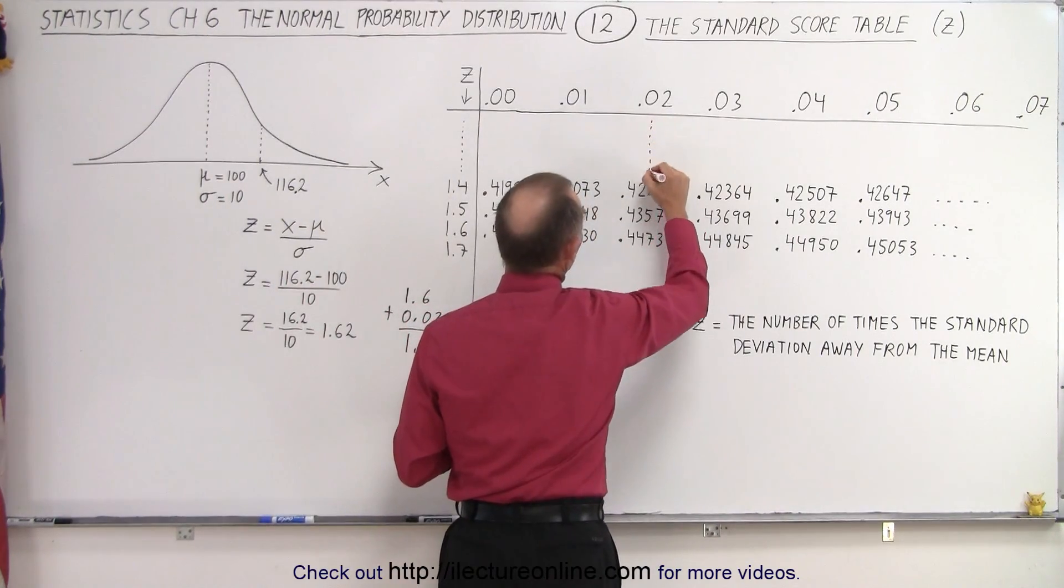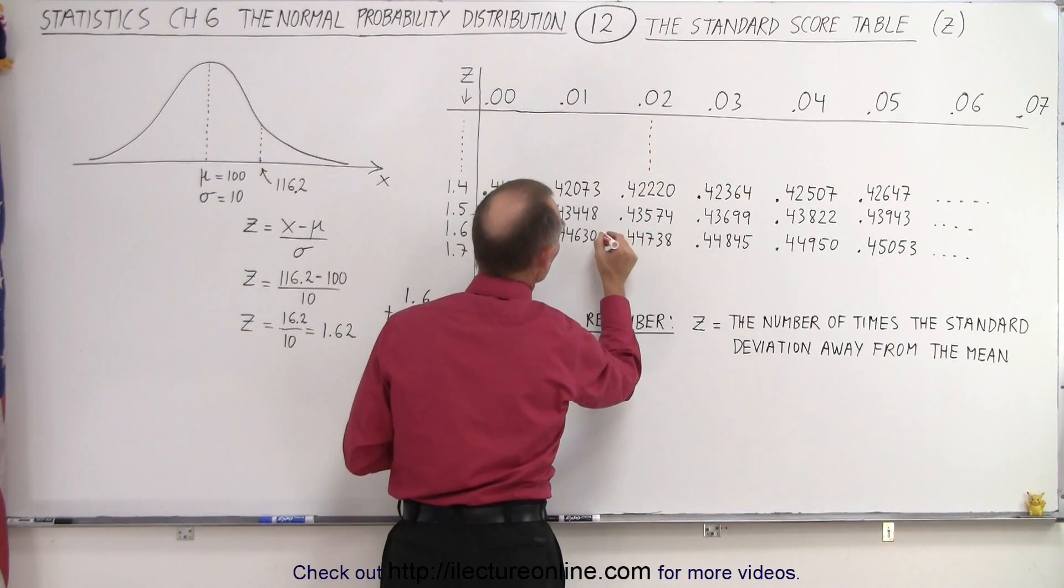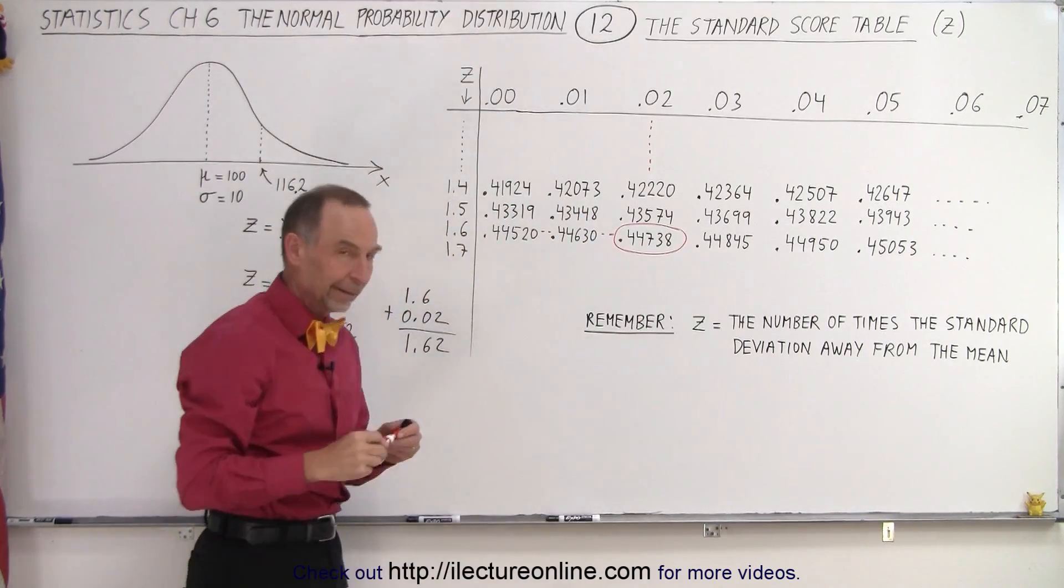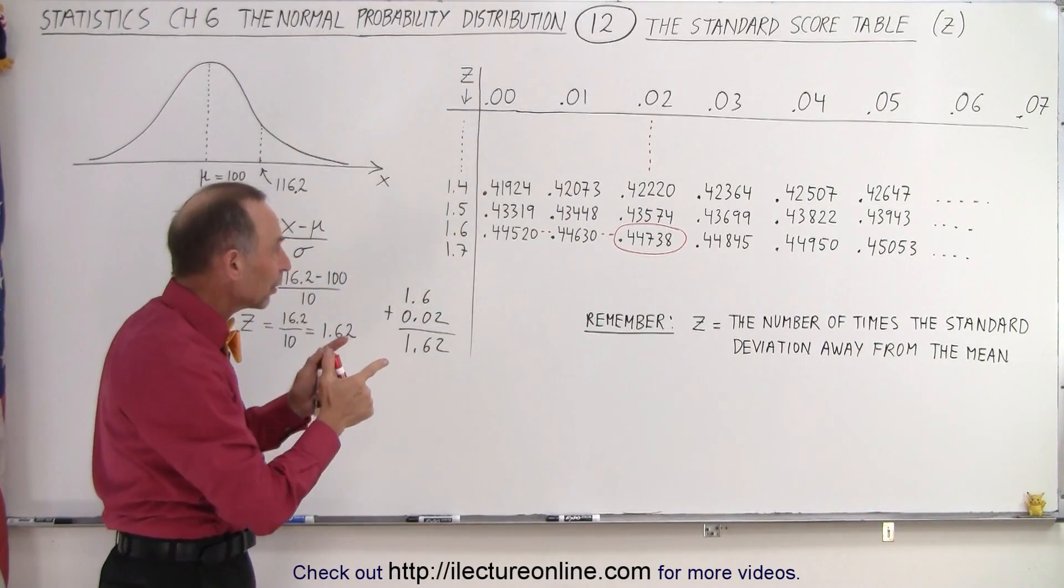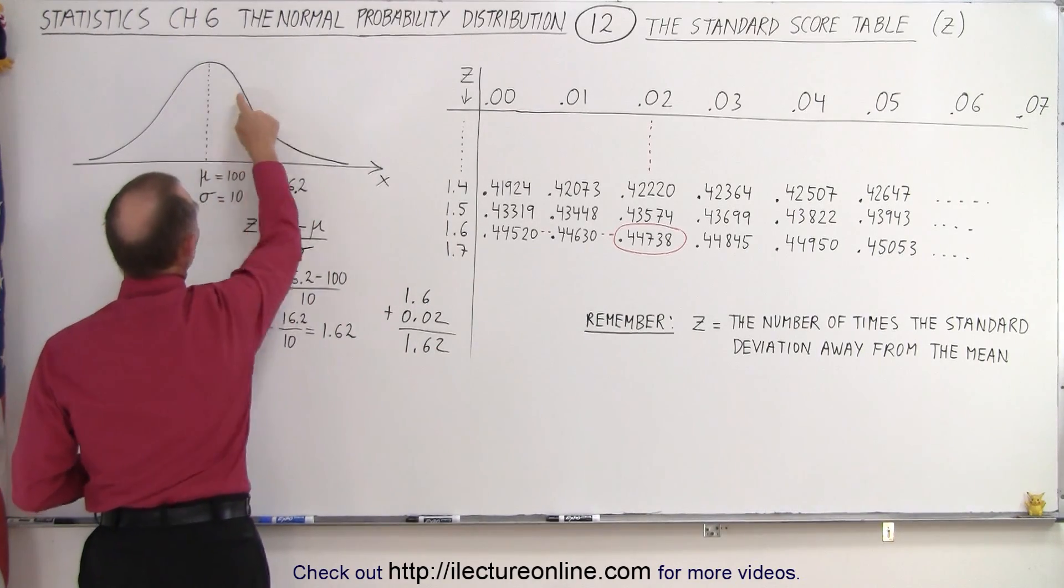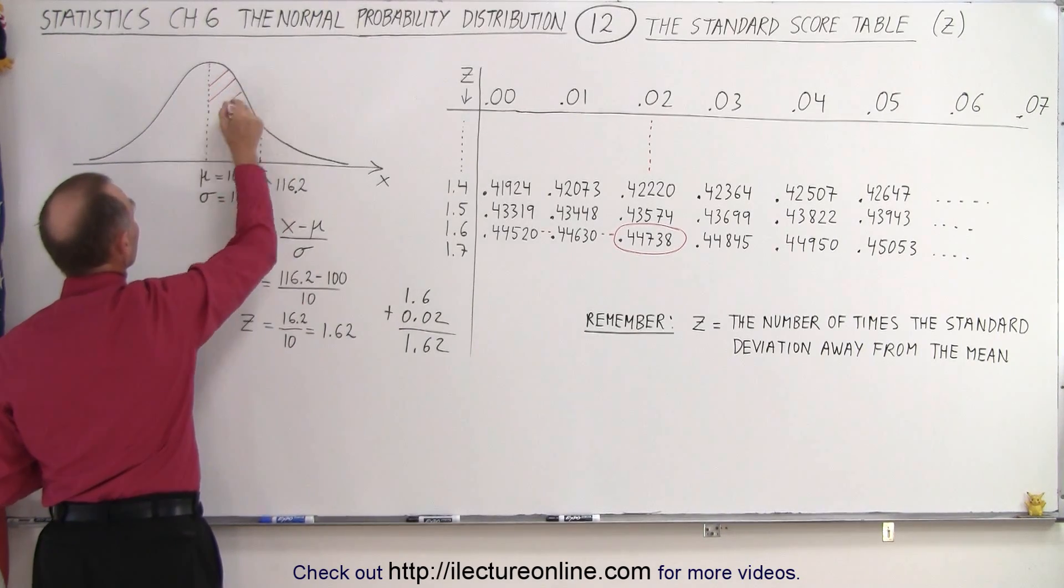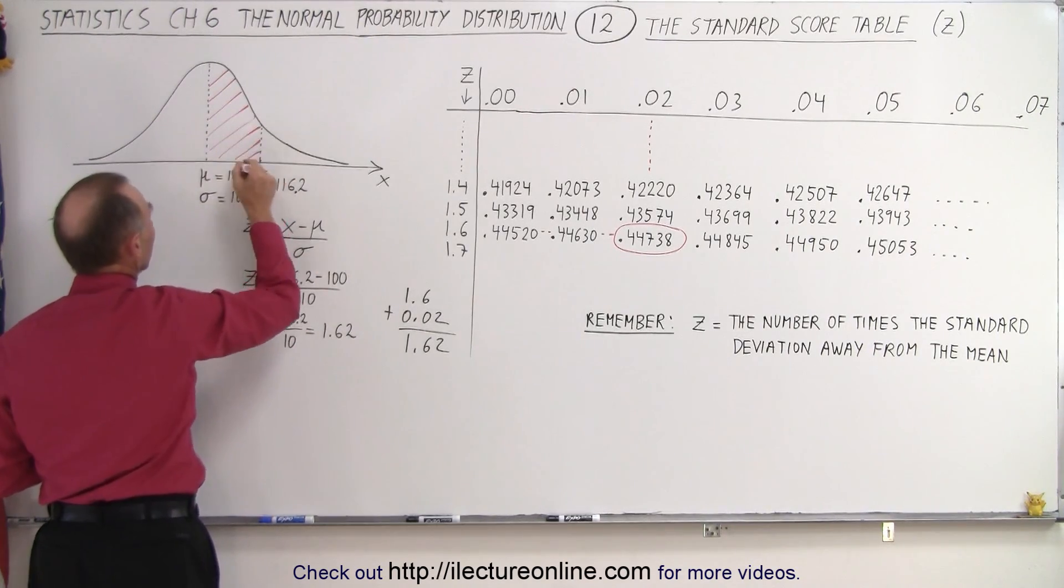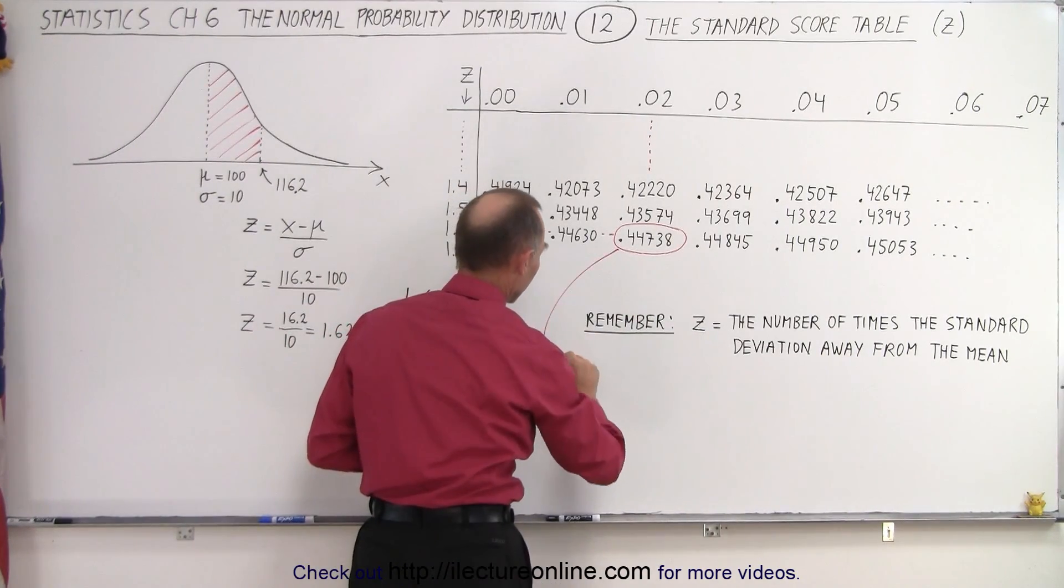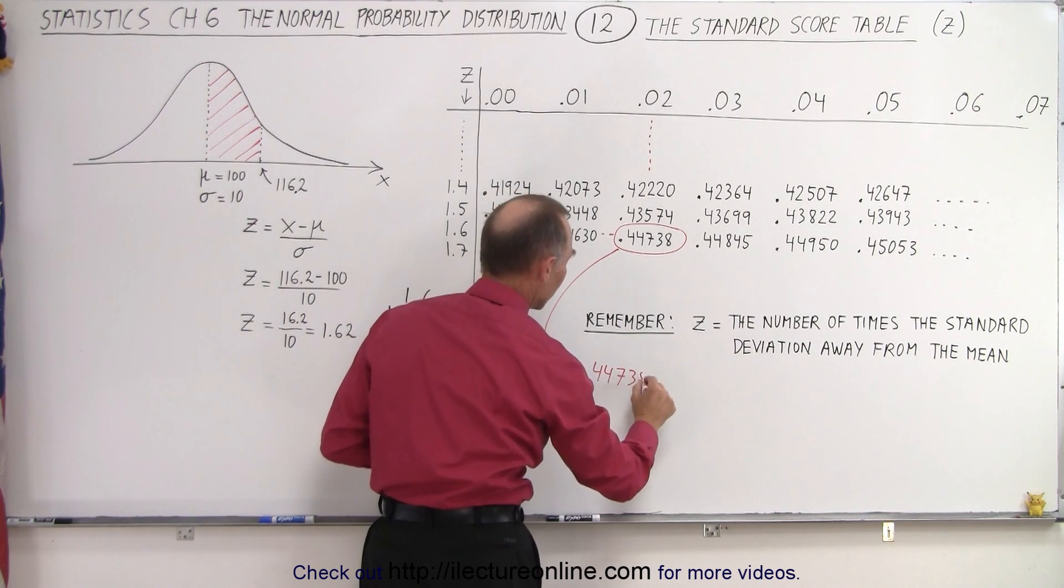So essentially we come down the 0.02 column all the way down here and we go across this column right here. And when those two meet, this is the number of interest. That is the area that's equivalent to the area between this point and this point underneath the normal distribution curve. So this area right here is represented by this number 0.4738.